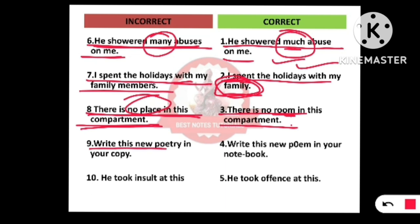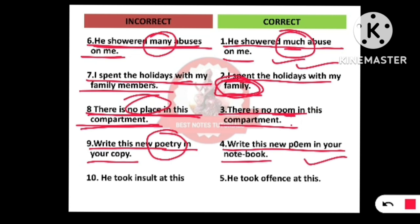Number nine: 'Write this new poetry in your copy.' The problem lies with the word 'poetry.' The correct sentence is: 'Write this new poem in your notebook.' A poem means one single work — like Wordsworth's 'Daffodils,' that is a poem. When we say 'poetry,' it means a collection of many poems. Use 'poem' for one specific work, and 'poetry' for a collection.